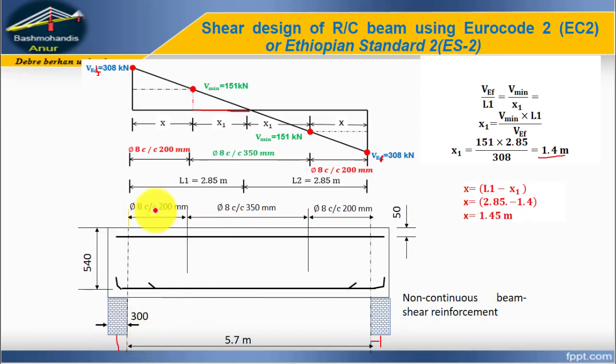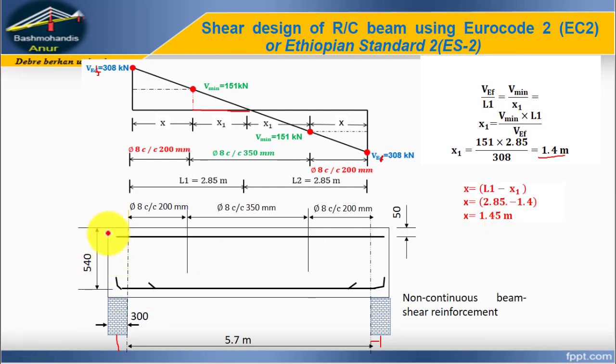Now look at the detailing. At x equals 1.45 m from the face of the support, provide 8 mm links at 200 mm centers for the design zone, transitioning to minimum links beyond that point.